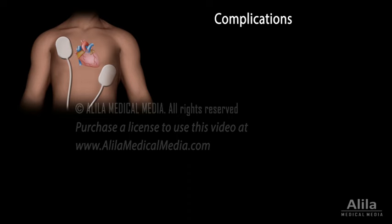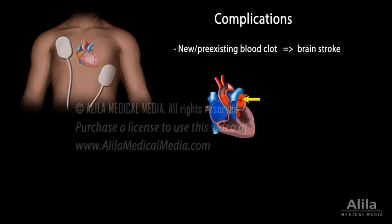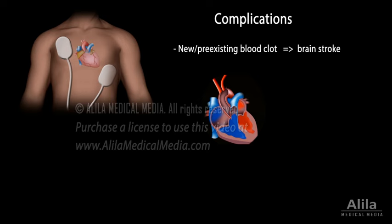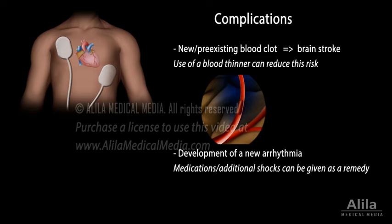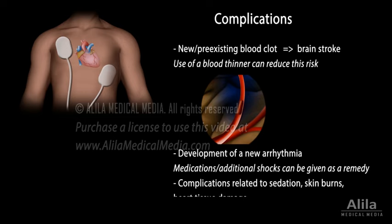Though uncommon, several complications may occur with cardioversion. The procedure can either cause a new blood clot to form, or a pre-existing clot — such as in patients with atrial fibrillation — to dislodge and travel to the brain, resulting in stroke. Use of a blood thinner before cardioversion can reduce this risk. Cardioversion can sometimes lead to development of a new arrhythmia, typically occurring a few minutes after the procedure, in which case medications or additional shocks can be given as a remedy. Other complications are related to sedation, skin burns at the site of contact with the electrodes, and rarely, heart tissue damage due to high energy or repeated shocks.